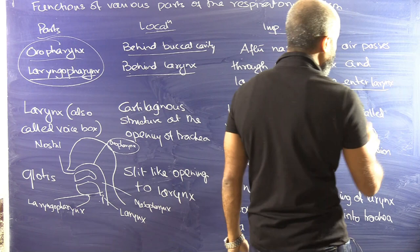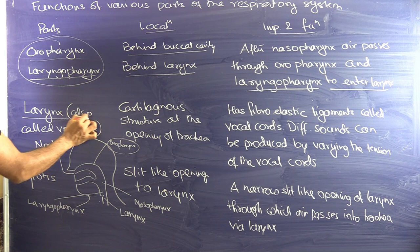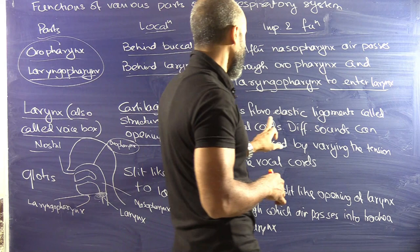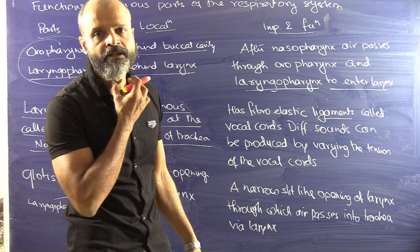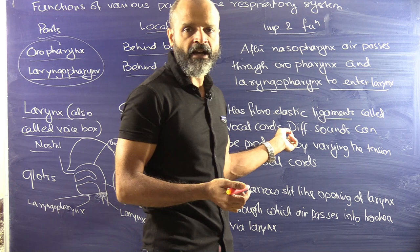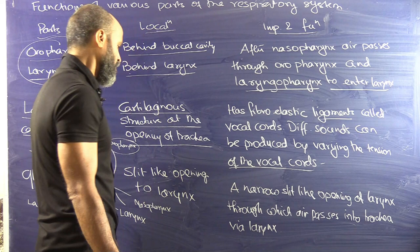There is a cartilaginous structure at the opening of the trachea. There are fibro-elastic ligaments called vocal cords through which sound is produced when we speak. These vocal cords are of different lengths in males and females, hence the voice produced is different. Different sounds can be produced by varying the tension of the vocal cords.